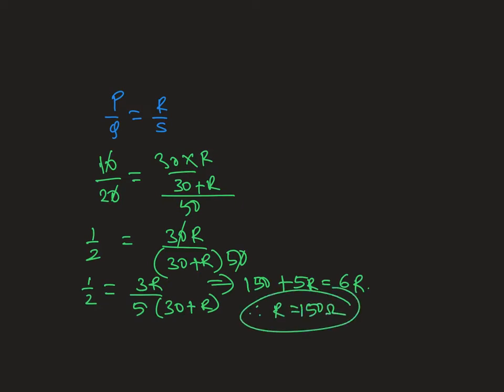Now for varying S: P is 10, so 10/20 = R/S, where R is 30. S is 50, and we connect S' in parallel. So it becomes: 1/2 = 30/(50×S'/(50+S')).